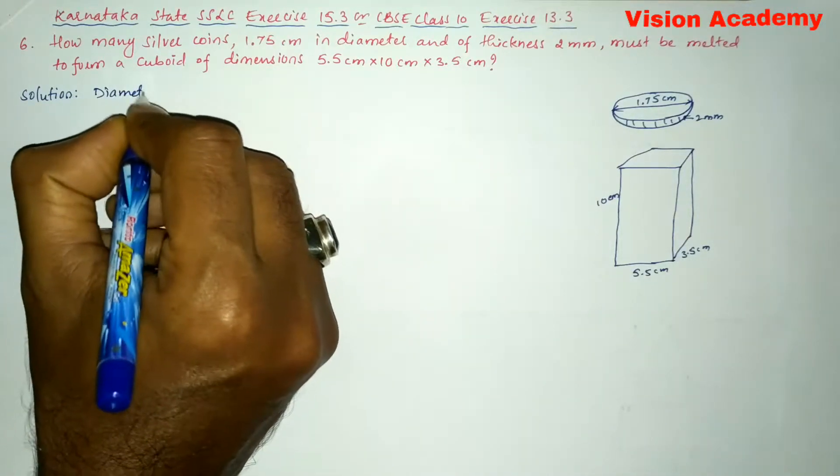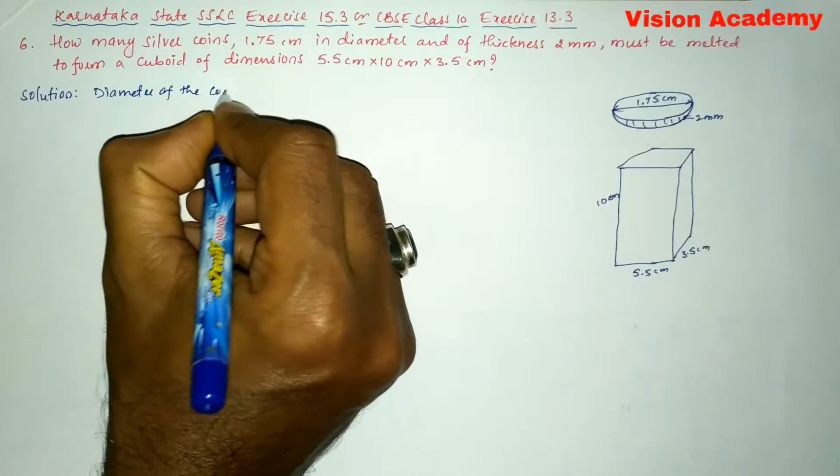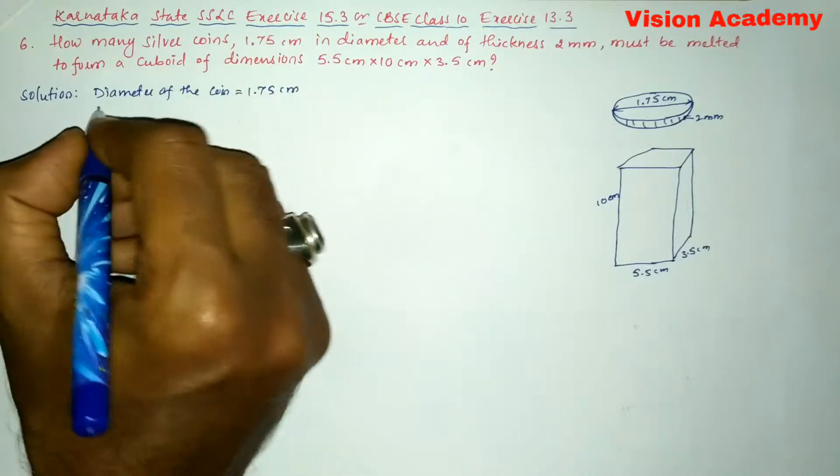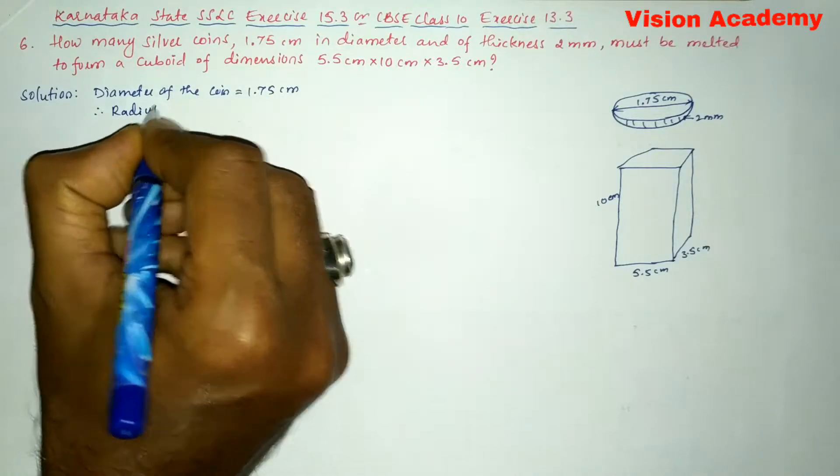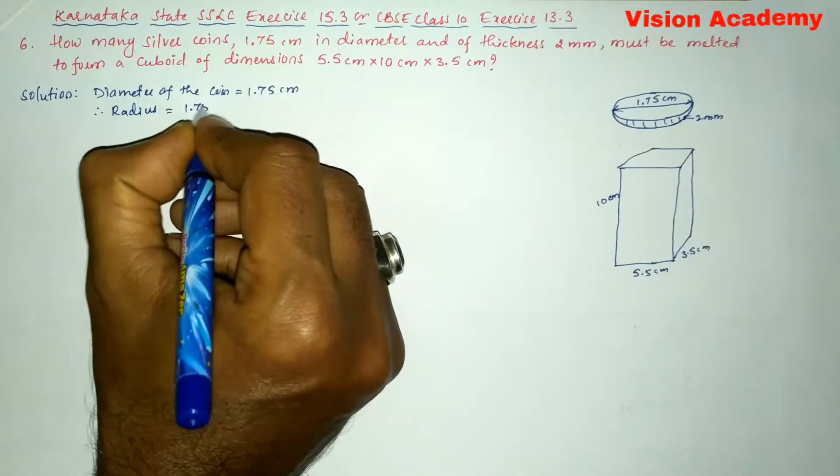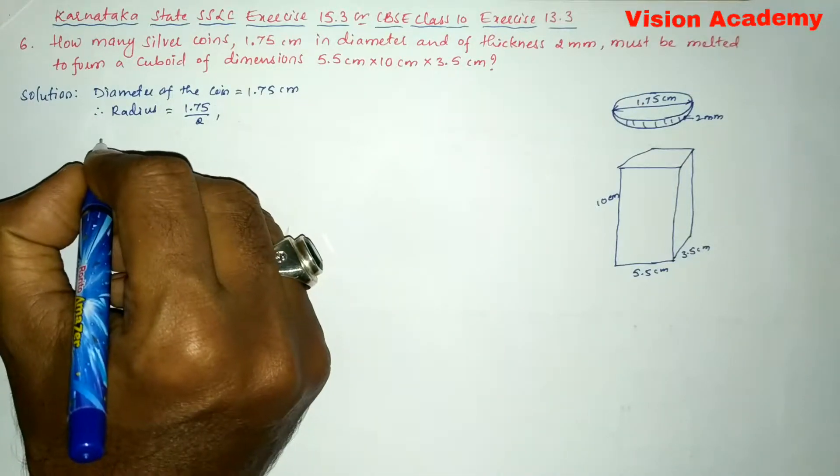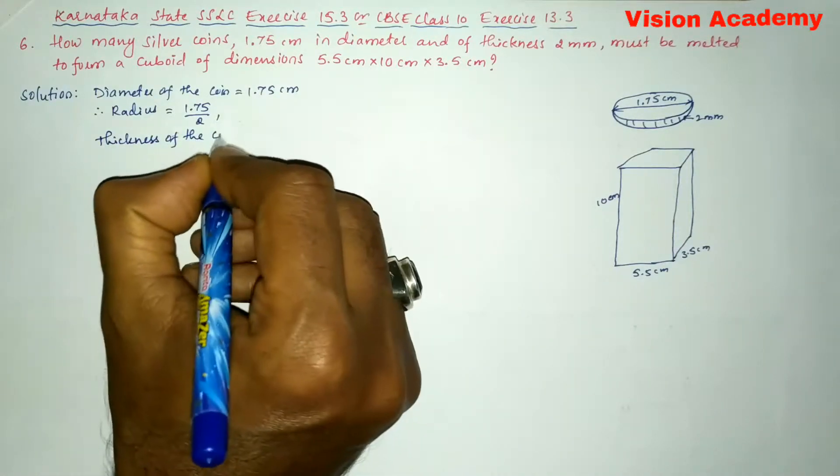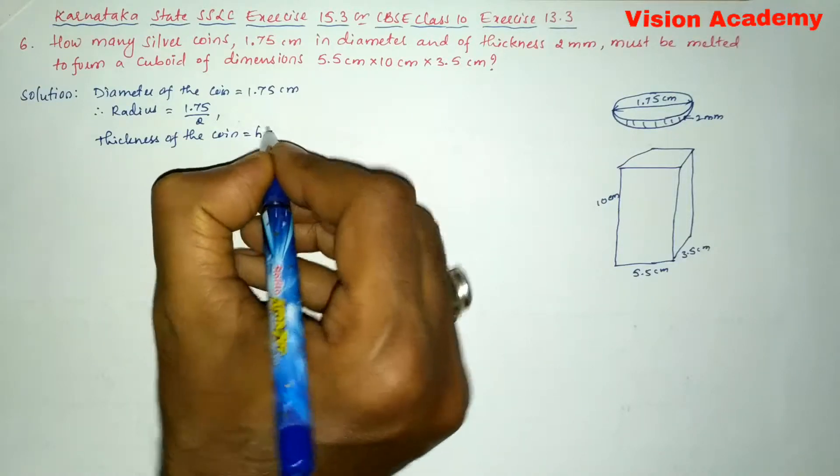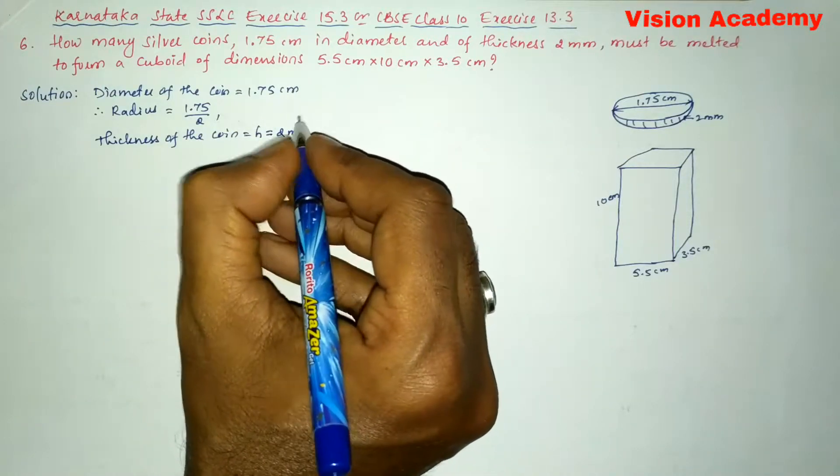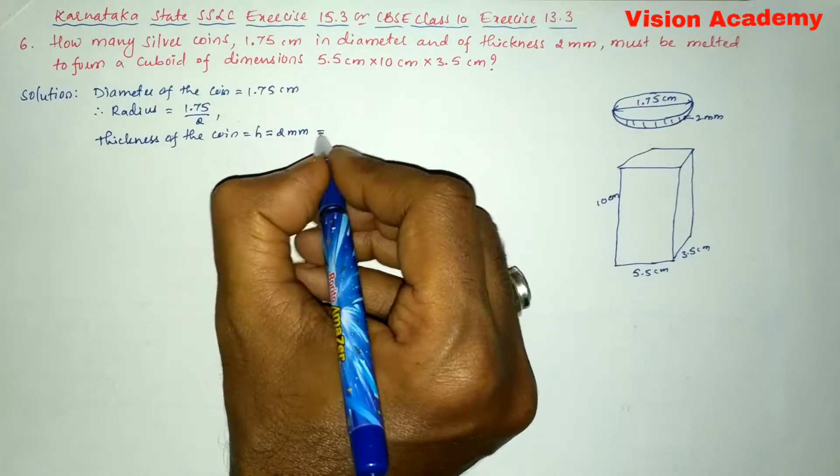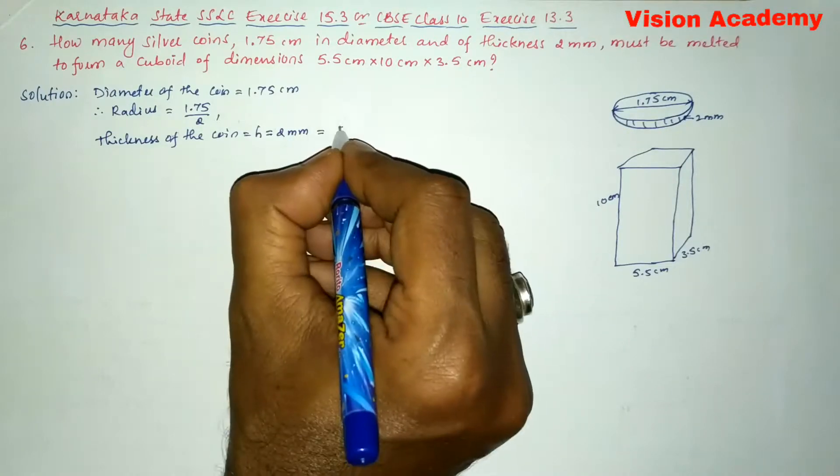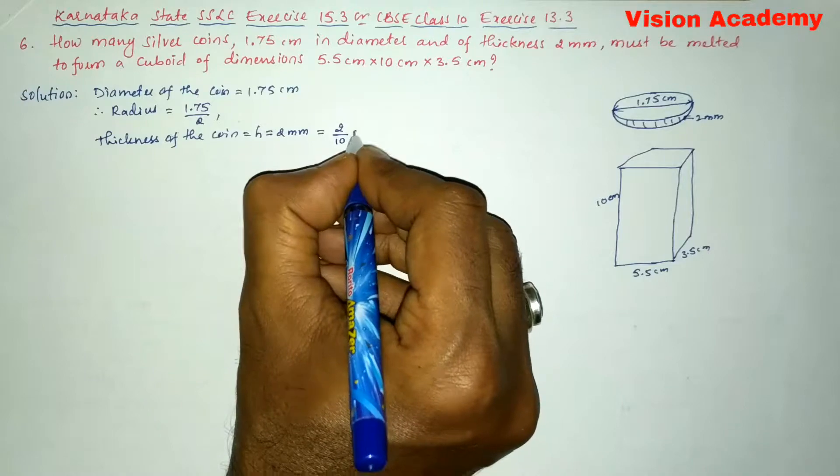Diameter of the coin is equal to 1.75 cm. Therefore radius is equal to 1.75 cm divided by 2. Thickness of the coin, that is height h, is equal to 2 mm. This 2 mm can be converted into centimeter because 10 mm equals 1 cm. So this 2 mm can be written as 2 divided by 10 cm.